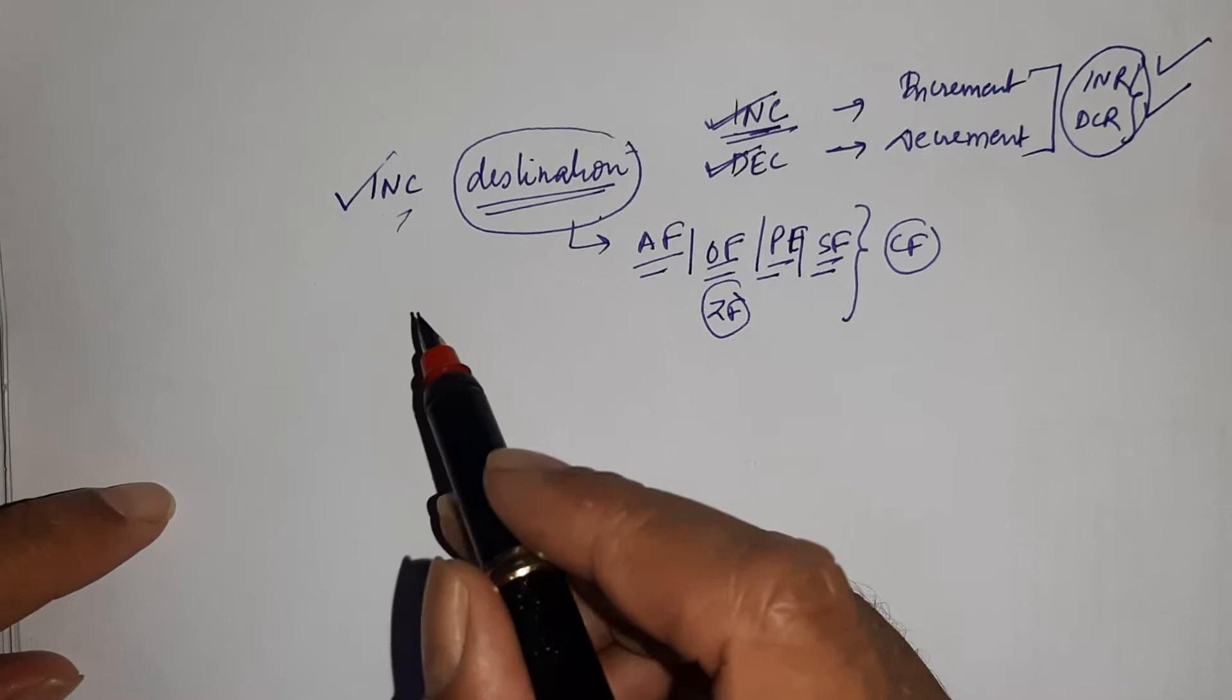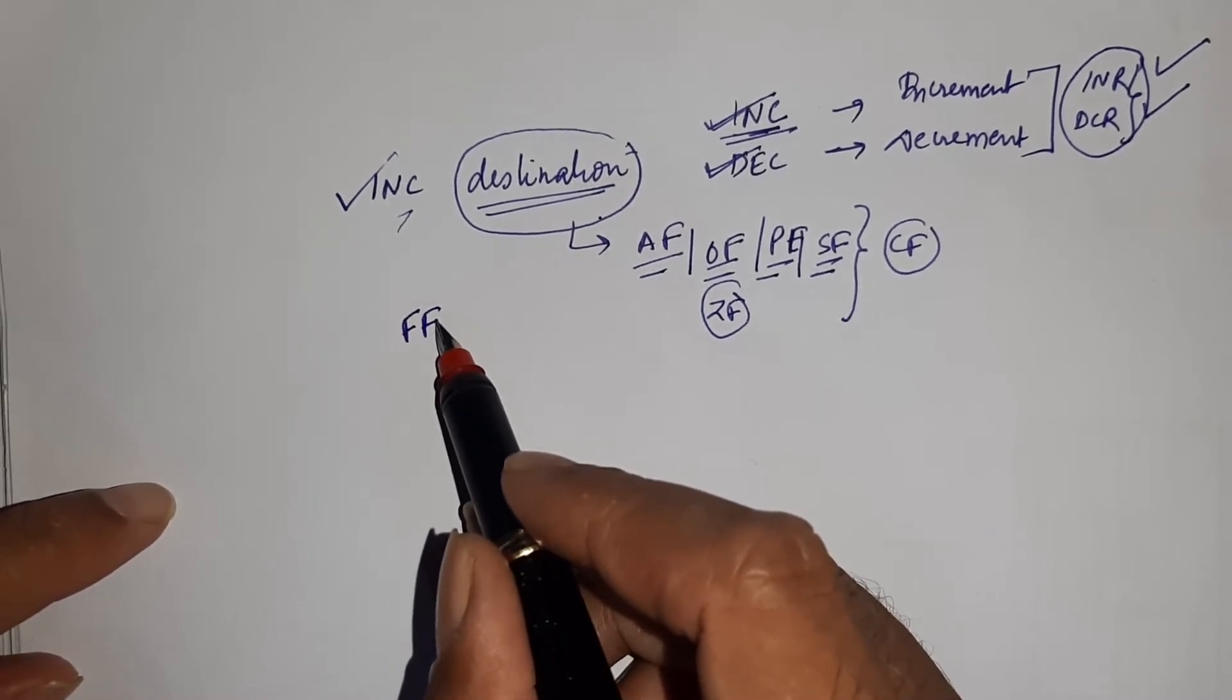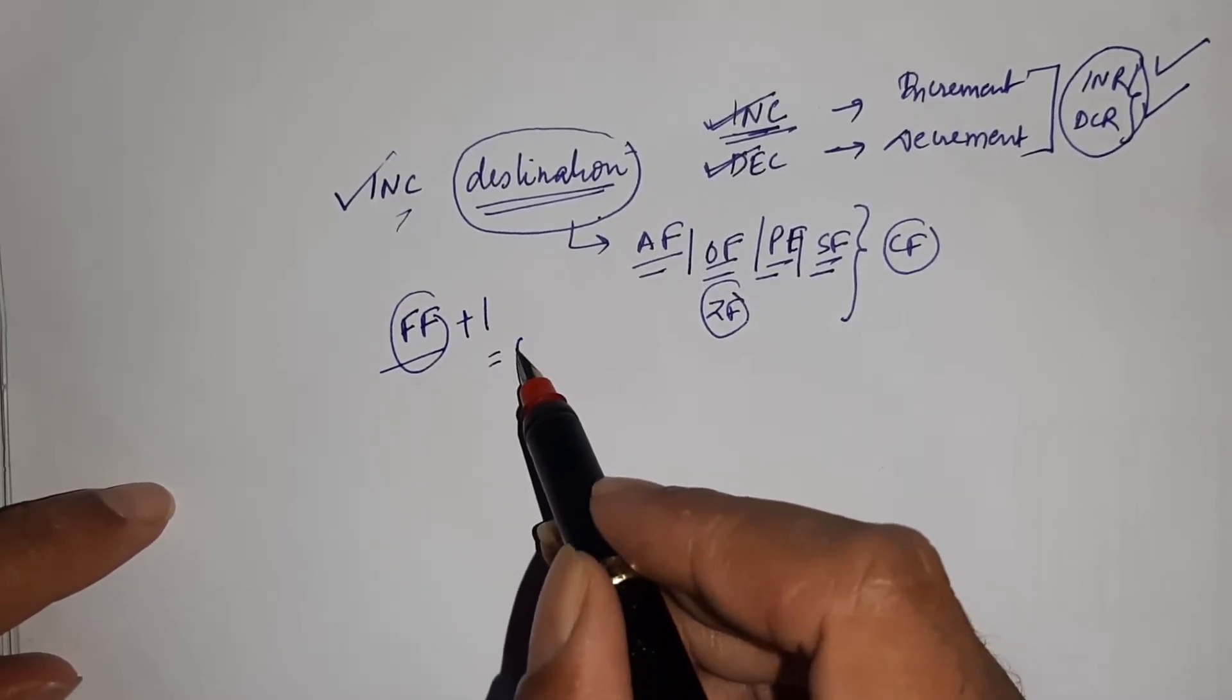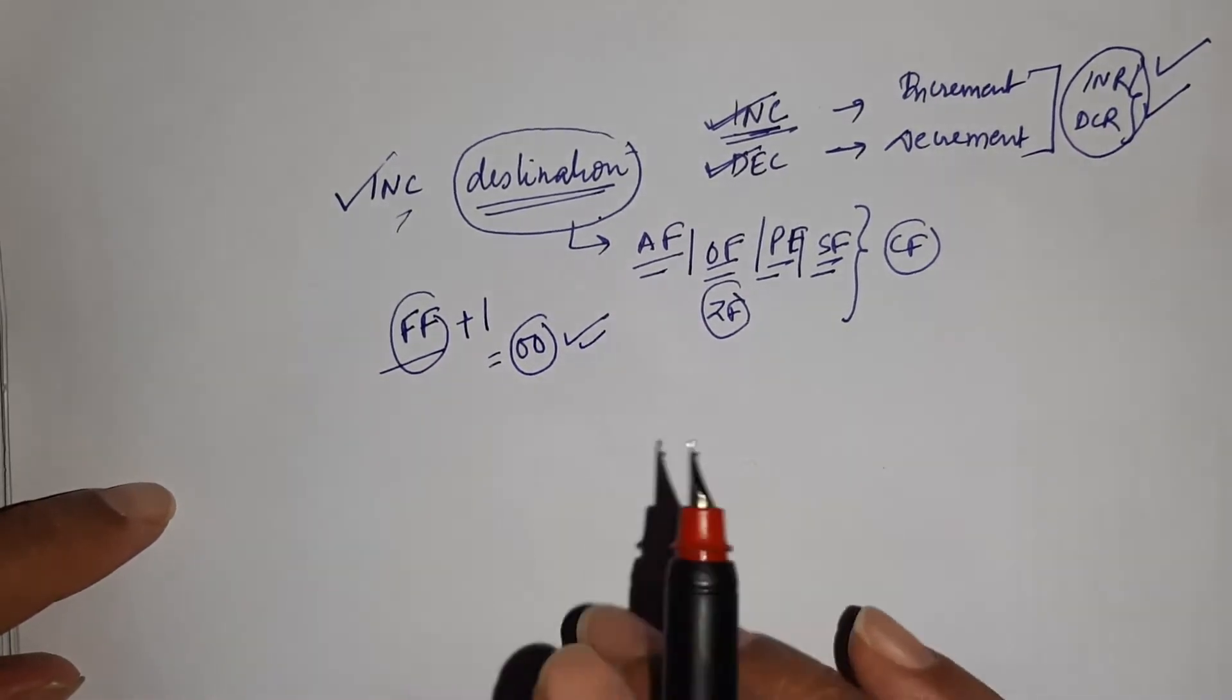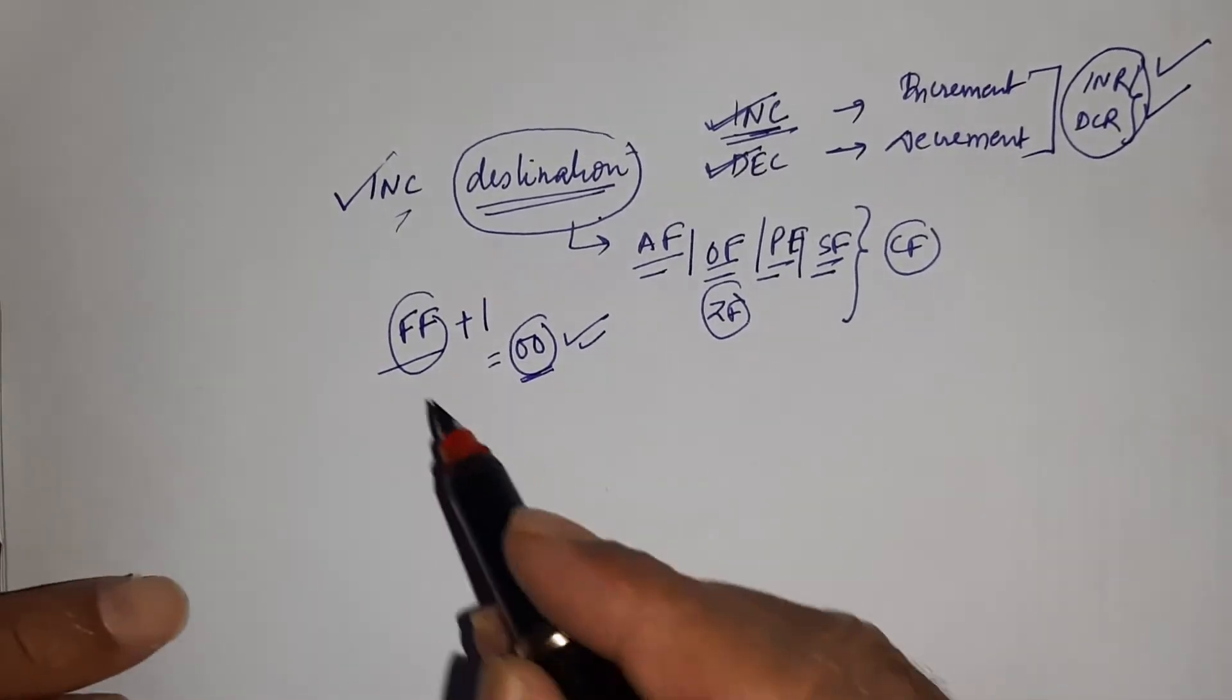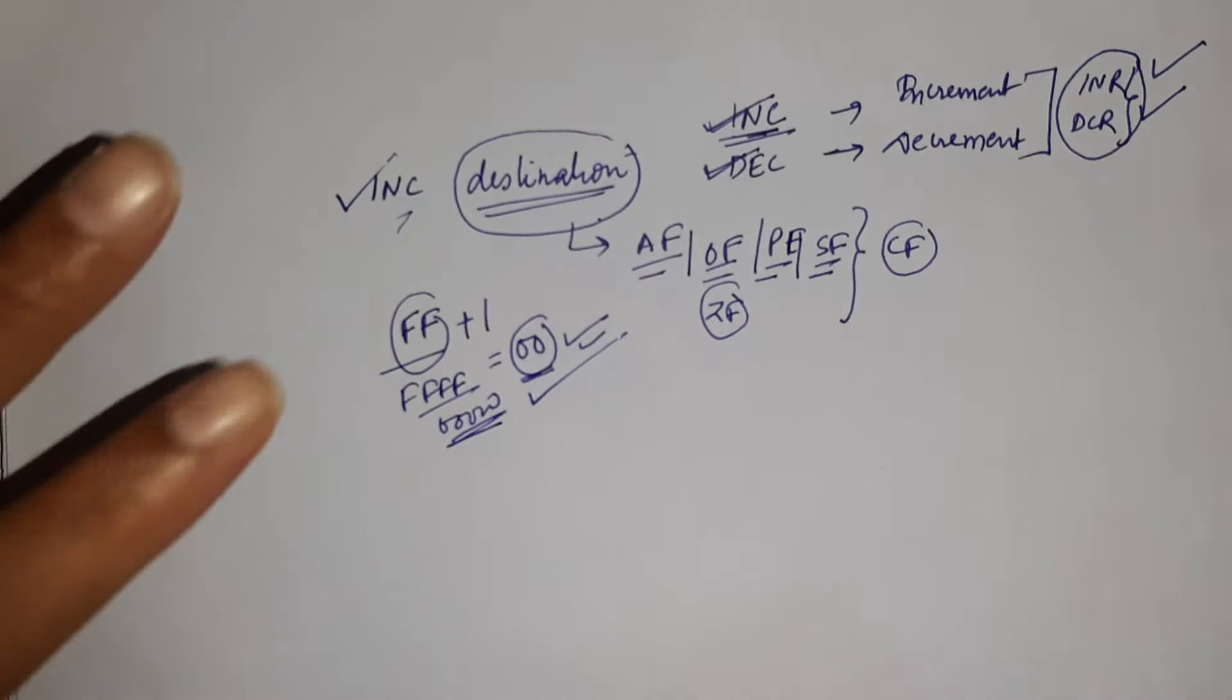Suppose there is an 8-bit destination and the value of that is FF. Then when you are going to increment, plus 1 will be added and the output will be 00. In this case, the carry flag will not be affected. Yes, here carry is generated, but that will be no carry. In the same case, if this is a 16-bit number, your output will be 0000.